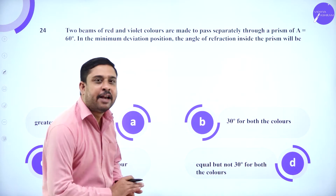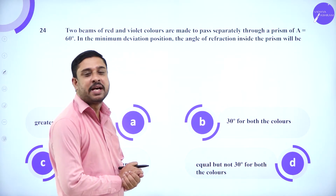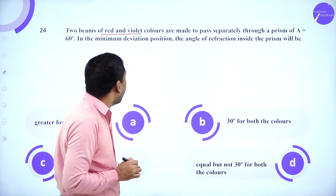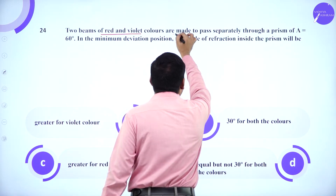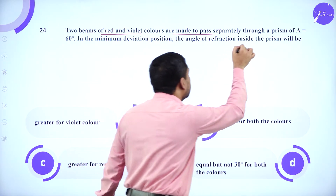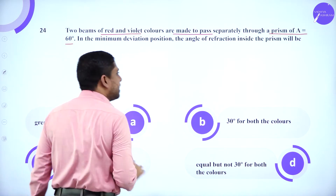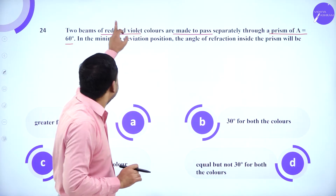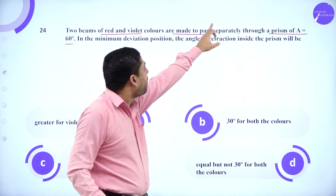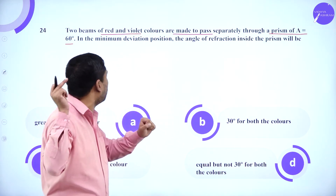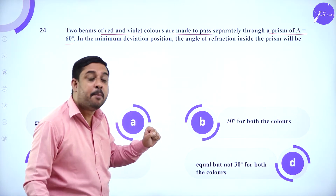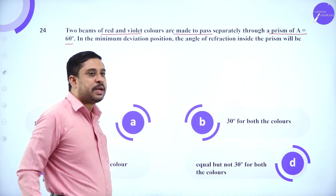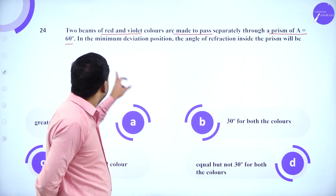Now a prism-based question from optics. Two beams of red and violet colors are made to pass separately through a prism of angle 60 degrees. Both colors pass through the prism one at a time in the minimum deviation position.